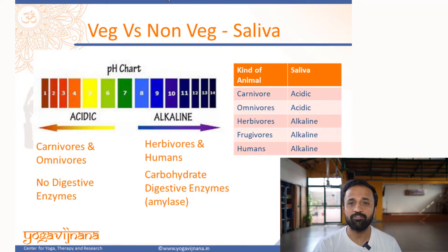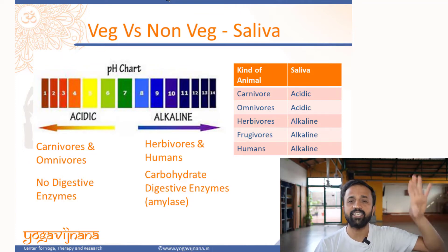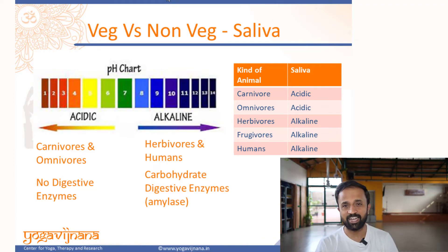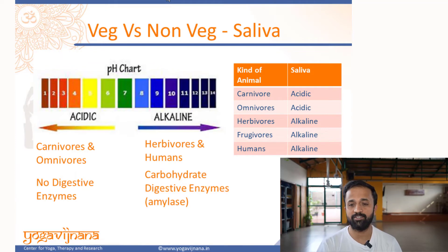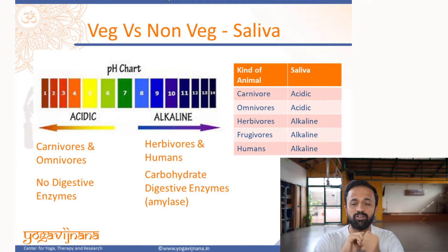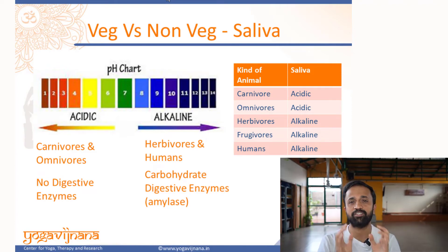If you look at saliva, the saliva of a carnivore is highly acidic in nature. That acid itself sometimes injects into and kills the prey. There is no digestive enzyme — it just gulps the food — the whole objective is to just catch and gulp the prey in. There is absolutely no digestion happening in the mouth. Whereas in humans and frugivore or herbivore species, the saliva is more alkaline — more basic in nature — and it has a lot of digestive enzymes inside the saliva itself, because we spend more time chewing food, and there is a lot of digestion happening in the saliva.